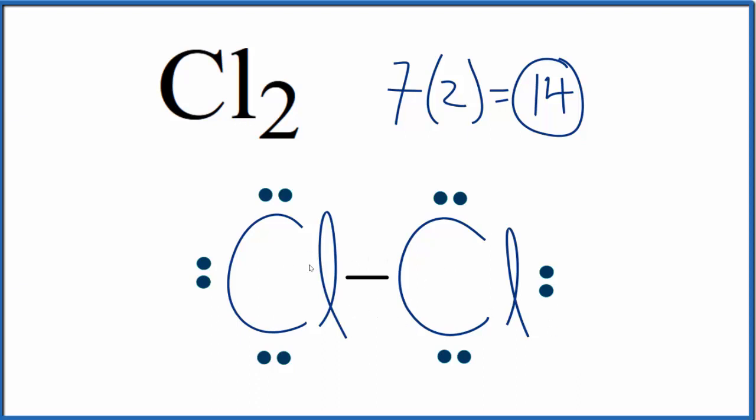If you were asked for the molecular geometry, since we only have two atoms, this would be a linear molecule and the bond angle would be 180 degrees. So this is the Lewis structure for Cl₂.